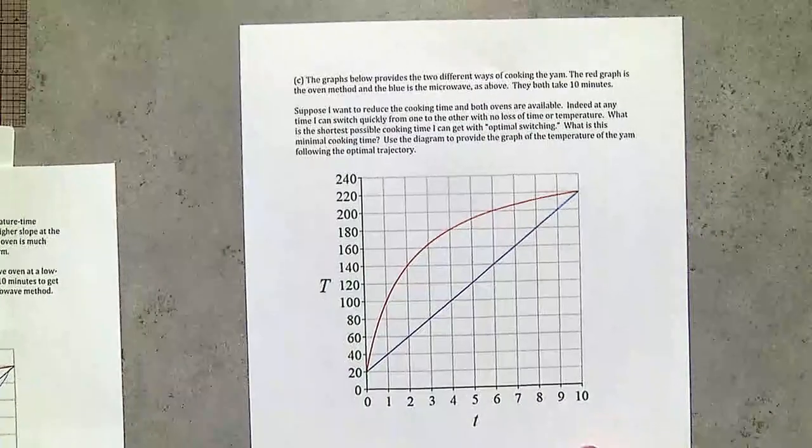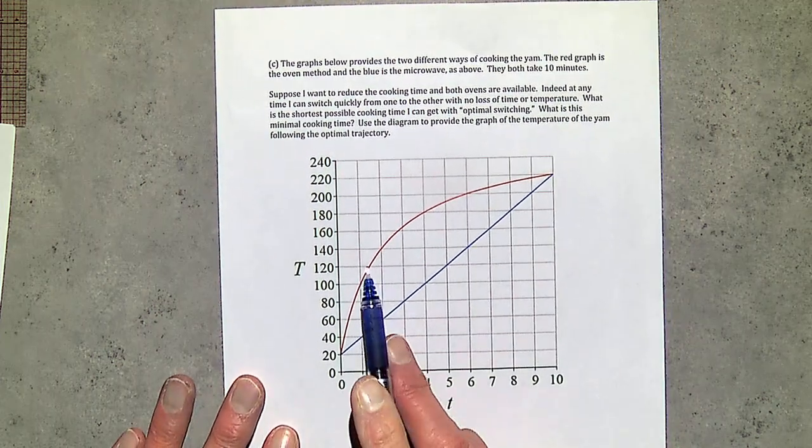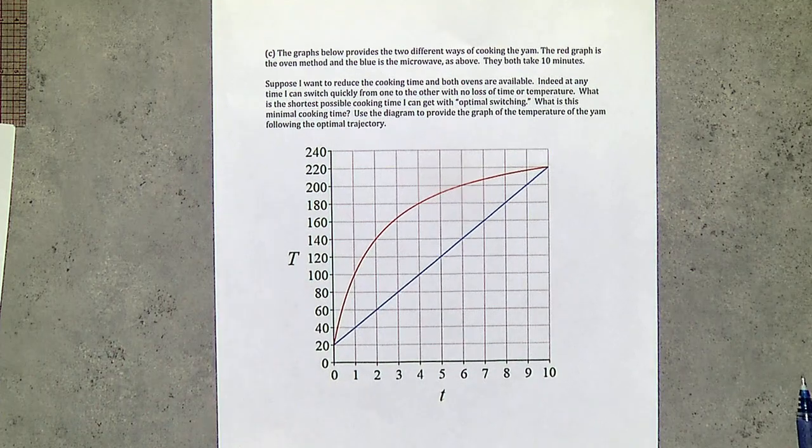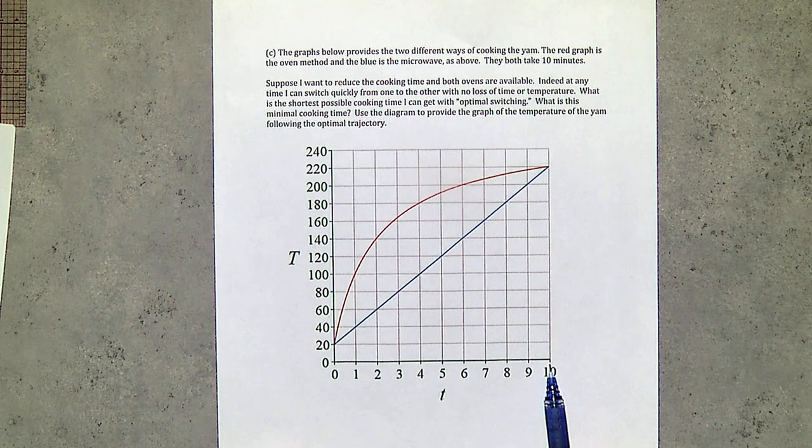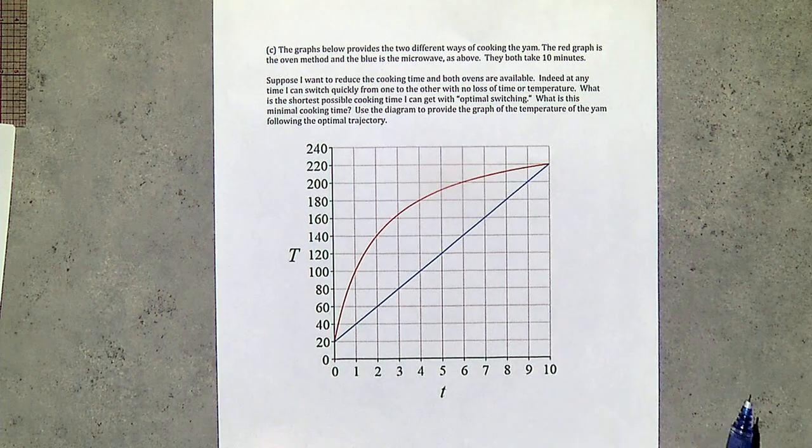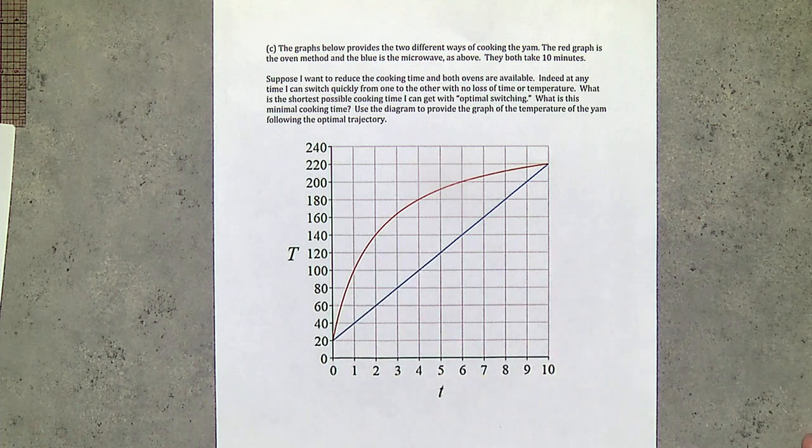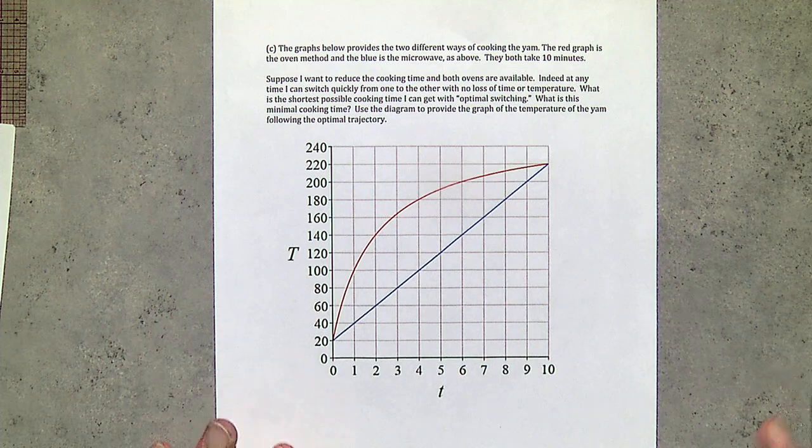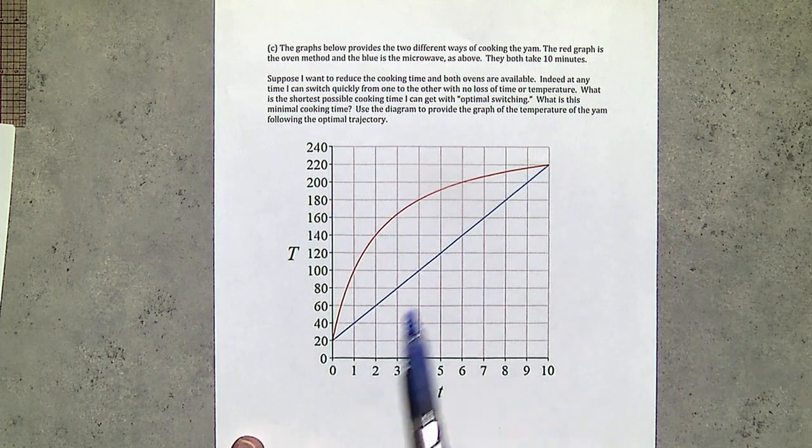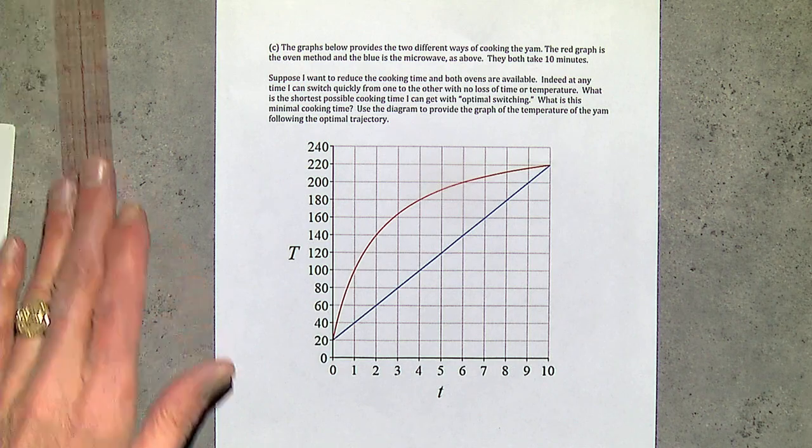So, now here's the problem. So again, I'm going to give them this new graph, which is the conventional oven here and the microwave here. And the question now is, you can use either method and you get 10-minute cooking time. Suppose I want to reduce the cooking time, but I'm allowed to use both ovens if I want, one at a time. So, I could start in one and switch to another and switch back and so forth. Switch back and forth and the switch is not going to cost me any time and it's not going to, there'll be no loss of heat. Can you figure out a way to reduce the cooking time? And indeed, how would you do it to minimize the cooking time?